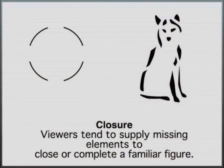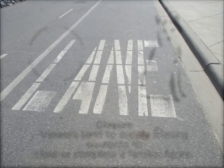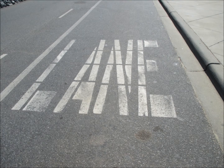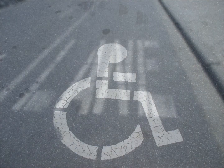Closure. Even though these figures have gaps in them, your brain easily fills them in to create an image we understand. In parking lots, closure is used in the form of signs on the pavement. Even though the word 'lane' is broken up into pieces, you can still read it. And even though this sign is broken up, you can still understand that it's a person in a wheelchair, indicating handicap parking.